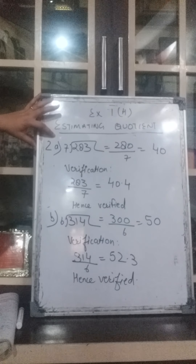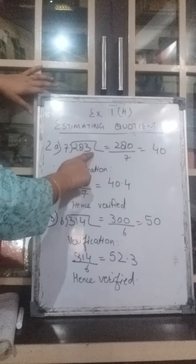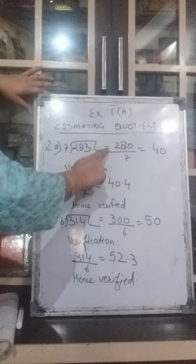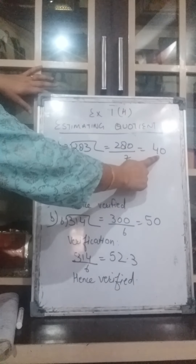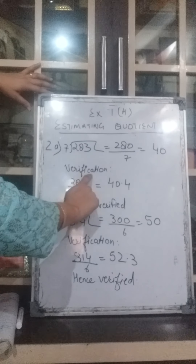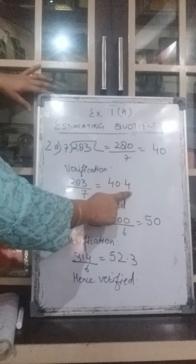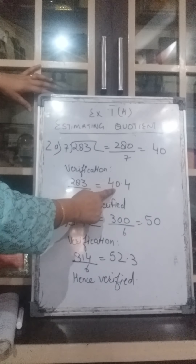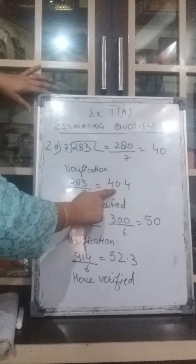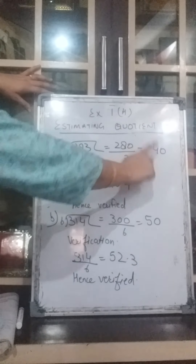Second question, A part: 283 divided by 7. We will round off the dividend to a number close to it which can be easily divided by 7. So it will be 280 divided by 7, which gives you 40. Now let's verify by actual calculation: 283 divided by 7 gives 40.4, which is approximately 40 — the same answer we estimated. Hence verified.